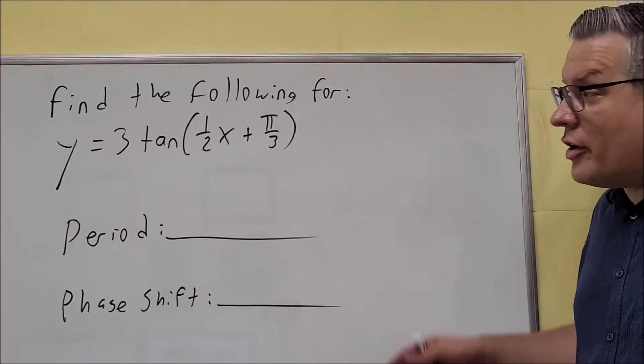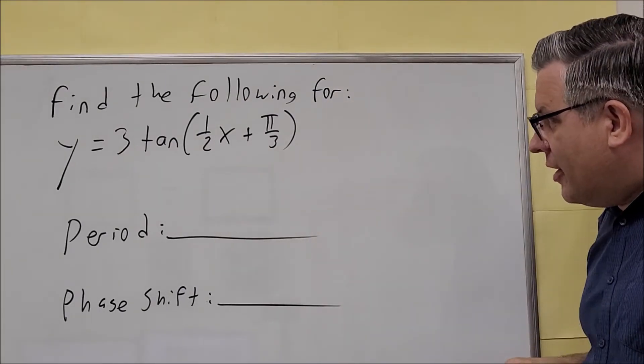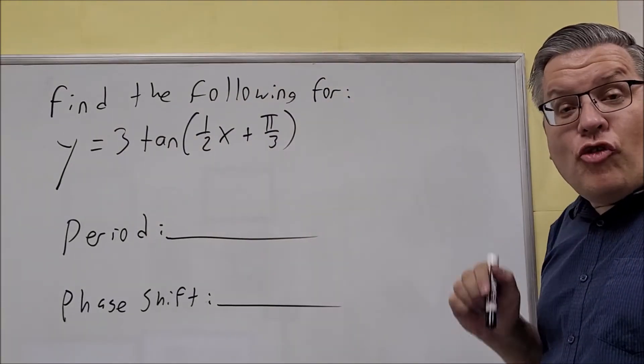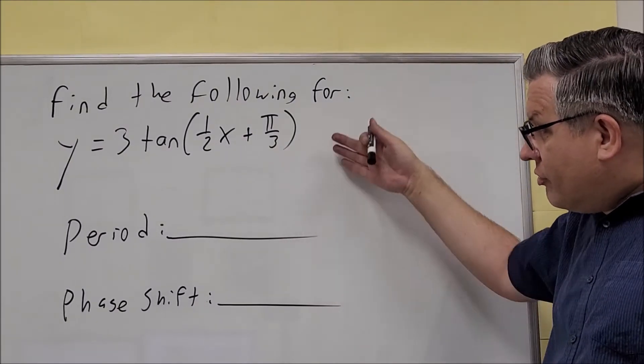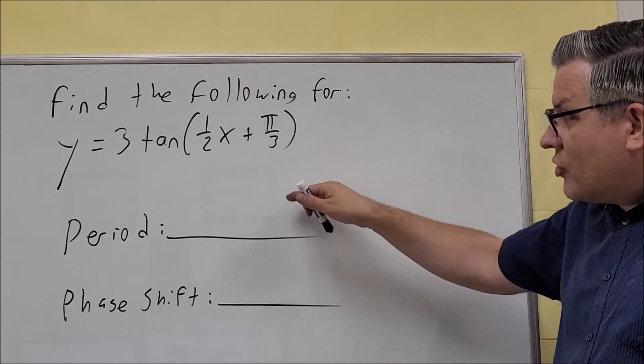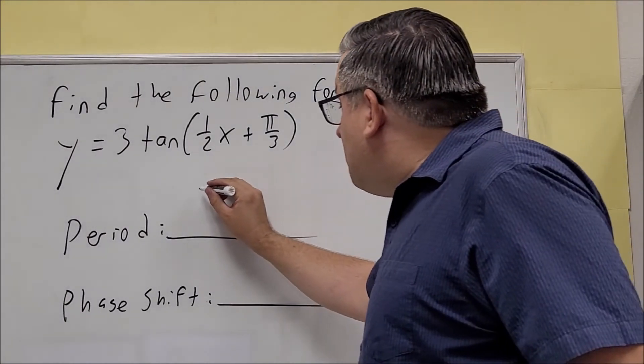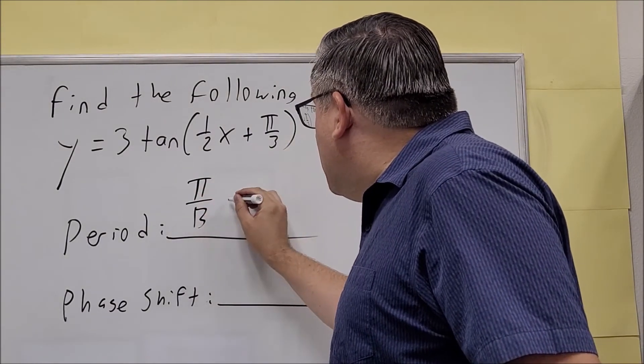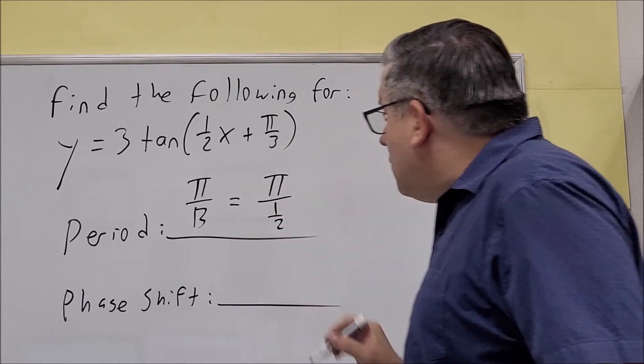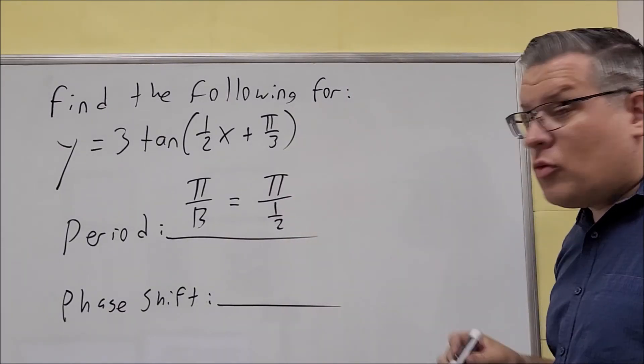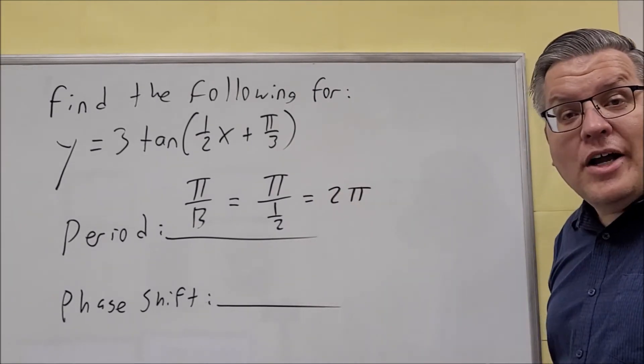Okay, for this problem, they want us to find the period and the phase shift for this right here. So we're going to use the formulas that we just talked about in the previous video in order to answer these. So first of all, we want to do the period. Now the formula for the period is going to be π over b, which in this case, we're going to do π divided by, the b is always a number in front of the x. So we're going to do π over 1 half, flip and multiply, it's going to give you 2π for the period.